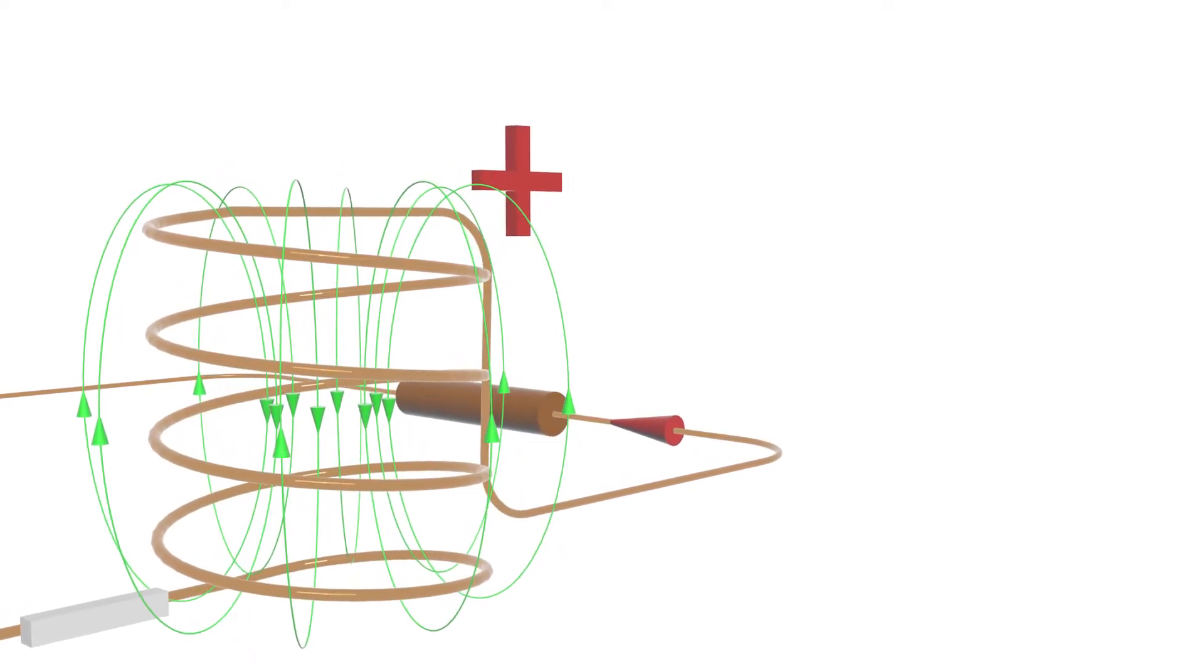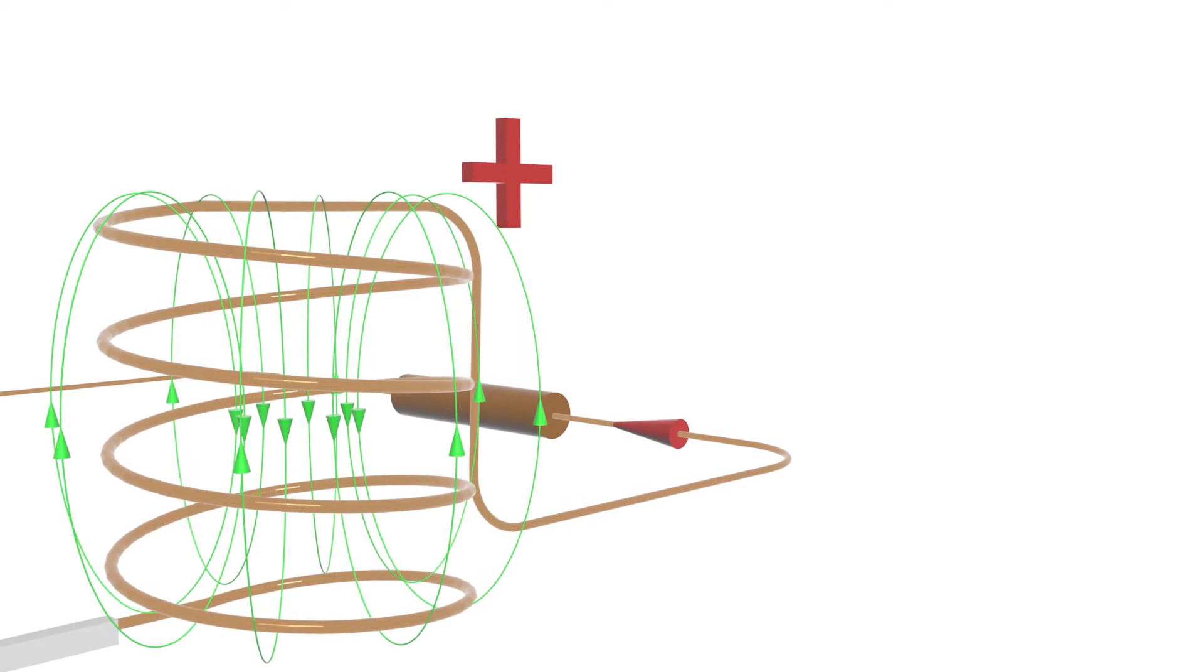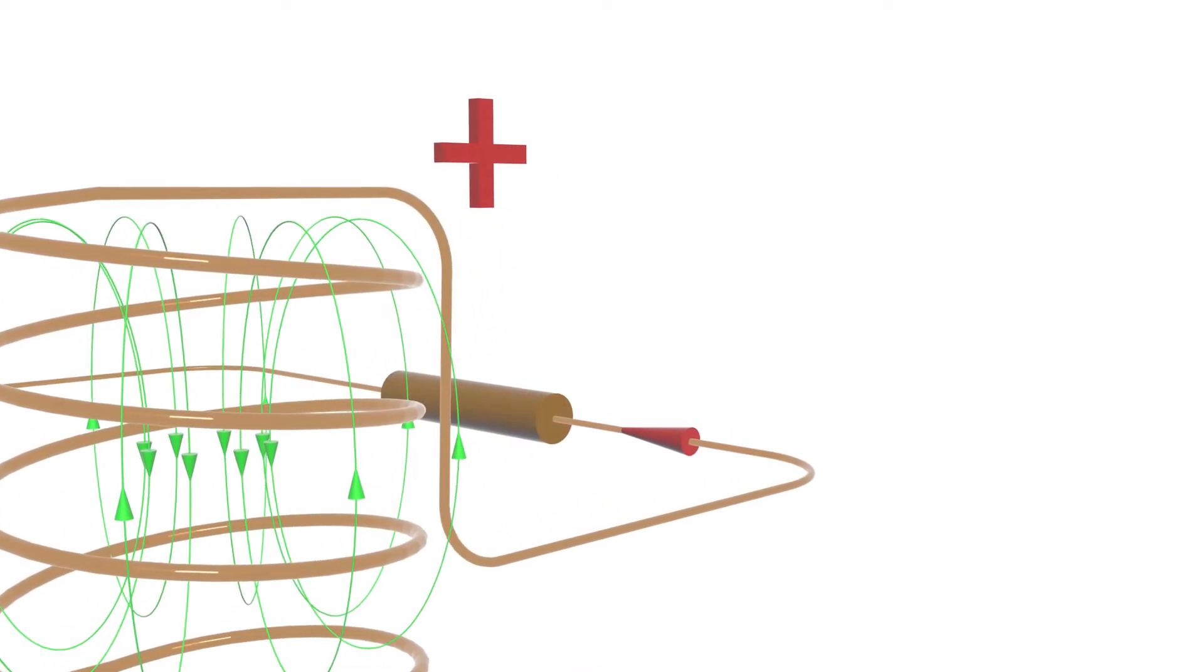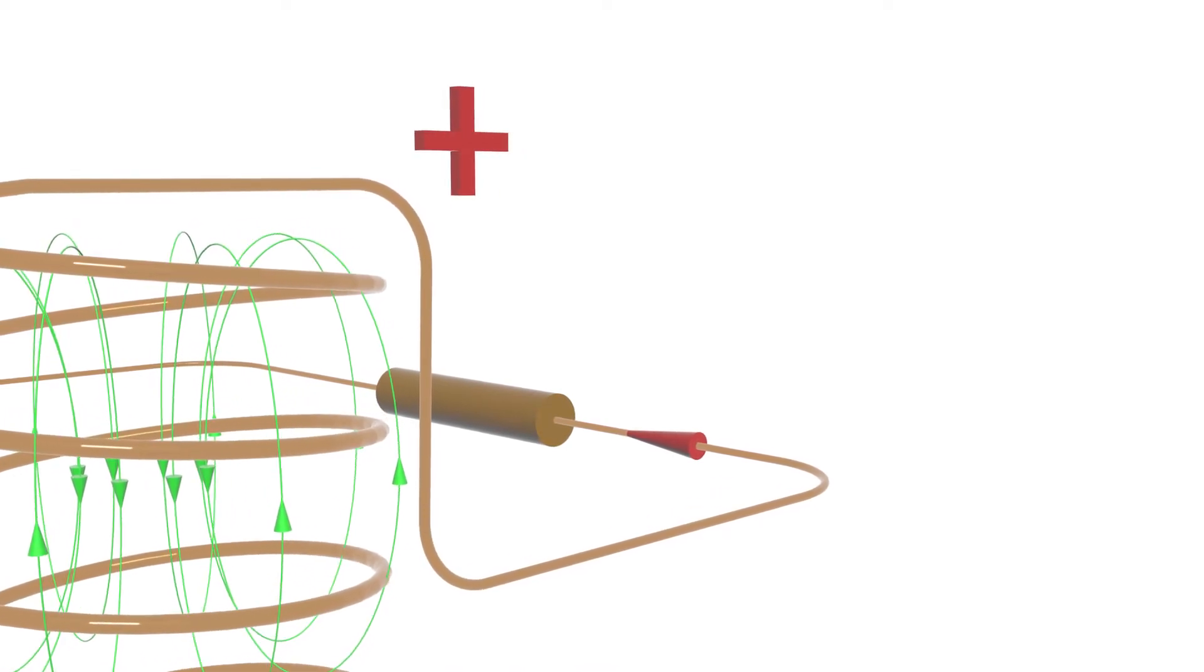Of course, as this energy is consumed by the resistor, the inductor is getting discharged. You can clearly see how the magnitude of the magnetic field decreases as time passes.